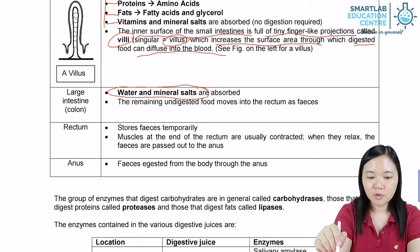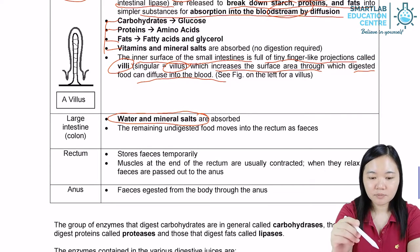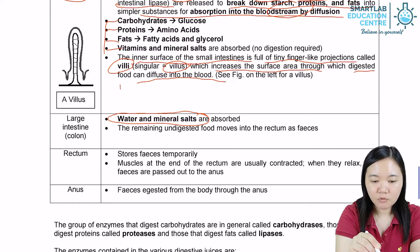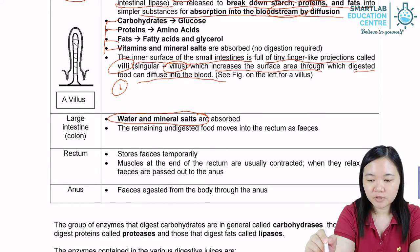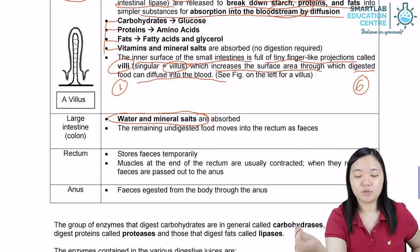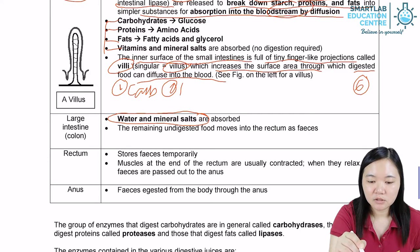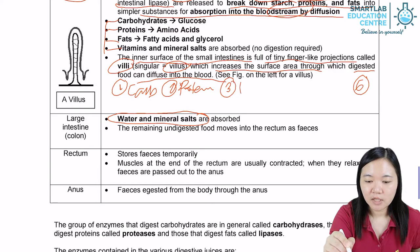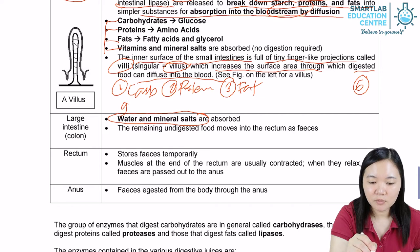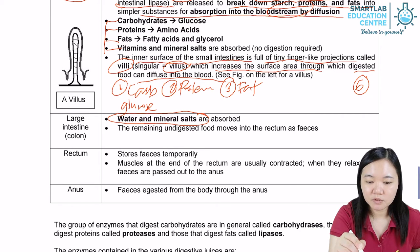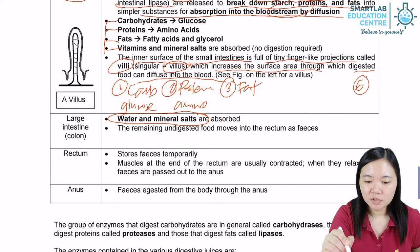The small intestine will absorb all types of food — from food type 1 all the way to food type 6. Food type 7 we cannot absorb. It will absorb carbohydrate, protein, and fats. The simplest unit of carbohydrate will be glucose, the simplest unit of protein will be amino acids, and the simplest unit of fats will be glycerol and fatty acids.